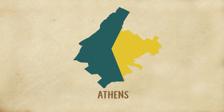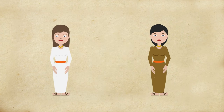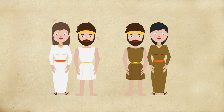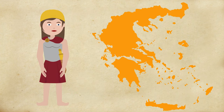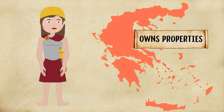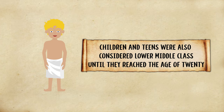Historians approximate that, in Athens, about 36 to 48 percent of people were slaves, often captives of war, while 19 percent were male citizens and 33 percent were family members of male citizens. Women were considered lower class, and most of their decisions were made by their fathers or husbands. The exception was in Sparta, where women had a few more rights such as owning property and training as warriors. Children and teens were also considered lower middle class until they reached the age of 20.